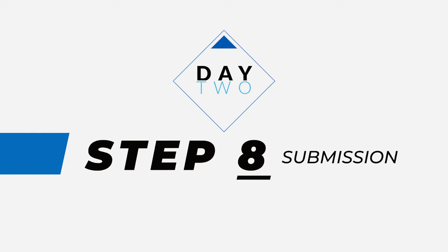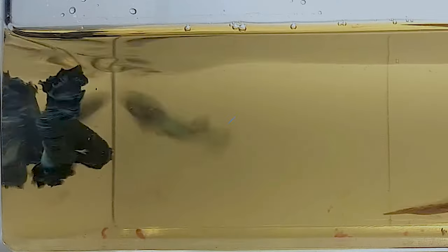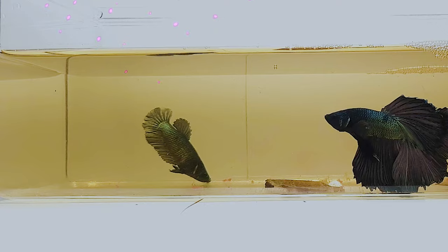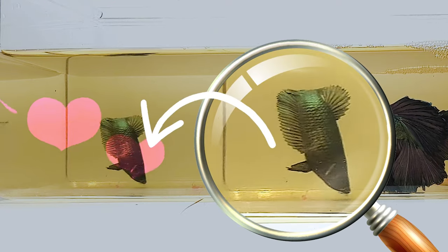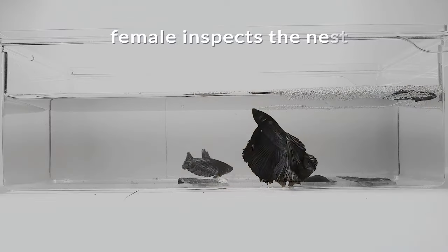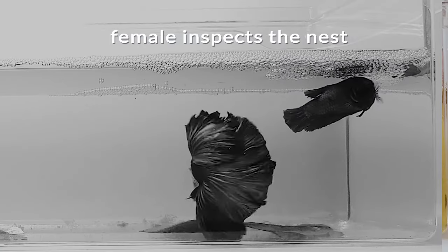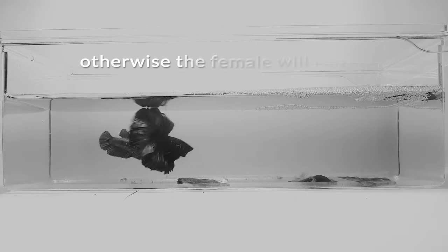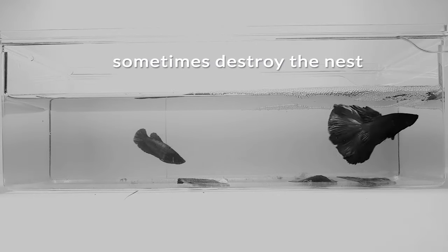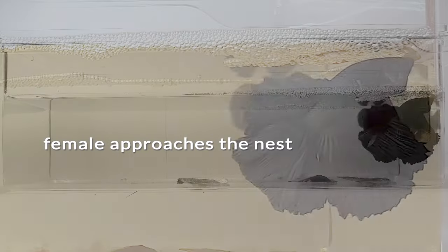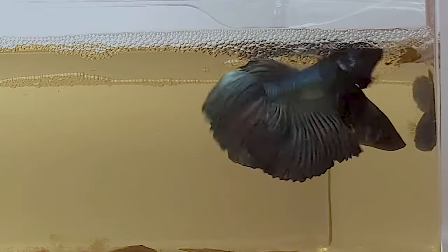Step 8. Day 2. Submission. The female will give up and will show submission. Some will swim head down like this one. Other females will just swim directly to the nest and inspect the nest if they're impressed. Otherwise, the female will run away or sometimes destroy the nest. When they're both ready, the female will approach the nest and dance with the male. Then our next step happens.